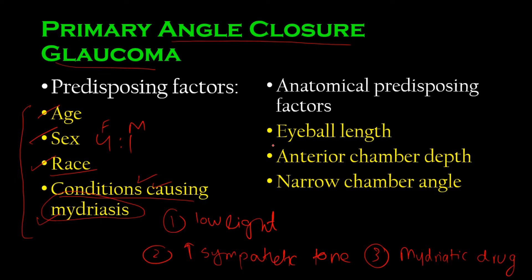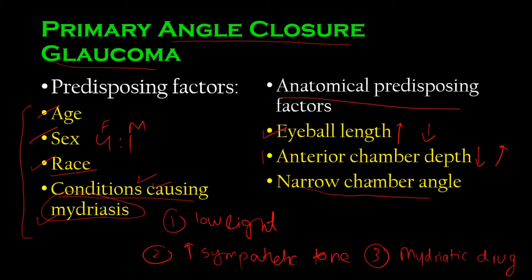There are also certain anatomical factors — the way the eyeball is structured — which could predispose someone to glaucoma. This includes eyeball length: if you have a longer eyeball, there's a lower chance of developing glaucoma. A decreased anterior chamber depth increases the chance of developing glaucoma. And if you have a narrow iridocorneal angle, there's a high chance you'll develop glaucoma — that one is fairly obvious.